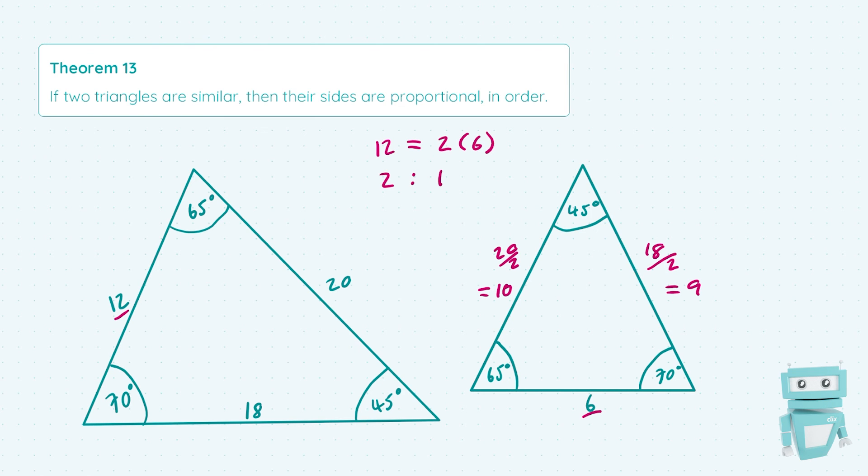Which means that essentially what we've done here is because our similar triangles have one side, which is half the length in the second triangle as the first, every other side is also half the length as it was in the first, because once again these triangles are similar. So that's it for this video and I'll see you next time.